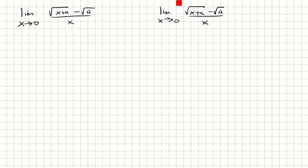To solve it algebraically, we're going to multiply by the conjugate of the top. So that's going to be square root of x plus a plus square root of a. And so that's going to simplify the numerator as x plus a minus a. And then in the denominator, we're just going to leave it factored.